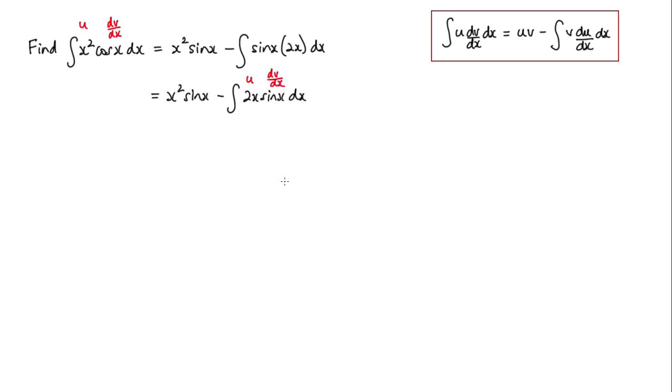So again applying the rule, we have x squared sine x. We've got a negative and I'll put this in brackets, so we have u times v. Well u is 2x and this time we have to integrate sine x which is negative cos x.